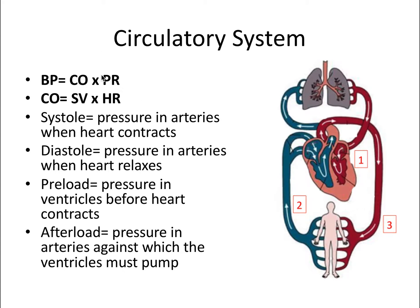There are two equations that define how these three factors contribute to blood pressure. BP — specifically mean arterial pressure — is the average pressure in the arteries and equals cardiac output times peripheral resistance. And cardiac output equals stroke volume times heart rate. So mean blood pressure equals stroke volume times heart rate times total peripheral resistance. An increase in any of these values causes an increase in blood pressure, and a decrease causes a decrease.